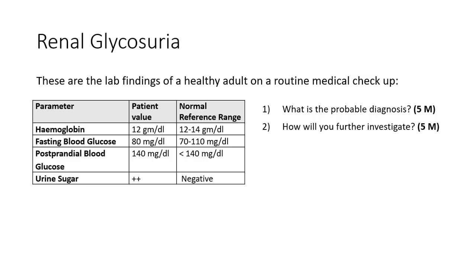In renal glycosuria: hemoglobin is normal, blood glucose is 80 mg/dL (normal), postprandial blood glucose was also normal, but urine showed presence of sugar. Despite normal fasting and postprandial blood glucose, urine sugar was positive — this is the pattern diagnostic of renal glycosuria. For further investigation, since it may be due to underlying renal pathology, evaluate renal function: serum creatinine, BUN, and serum electrolytes.